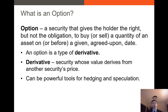So what is an option? An option is a security that gives the holder the right but not the obligation to buy or sell a quantity of an asset either on or before a given agreed-upon date. Options are one of many different types of what we call derivatives, whose value is derived from another security's price. We have as derivatives options, futures, swaps — all of these are different types of derivatives, and derivatives like options are very powerful tools for hedging and speculation.